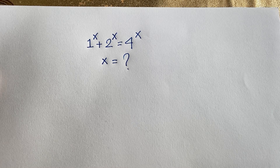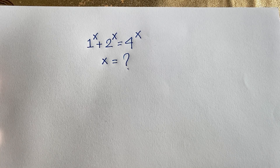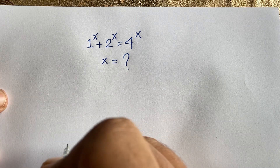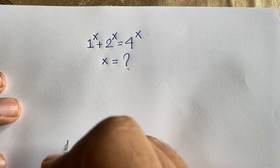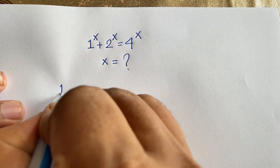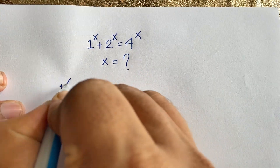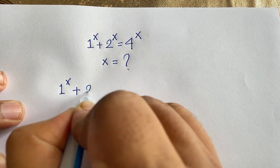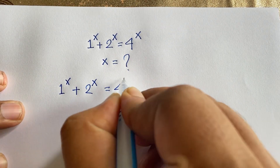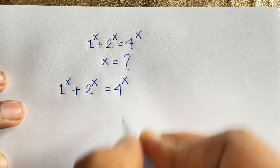Hello everyone. In this video we'll solve this interesting math question: 1 to the power x plus 2 to the power x is equal to 4 to the power x. What is x? How to solve this question? It is an interesting math olympiad question. So we'll find out — here is our equation: 1^x + 2^x = 4^x.